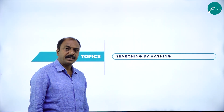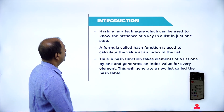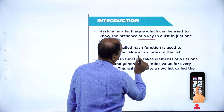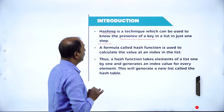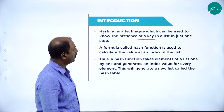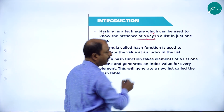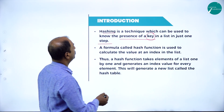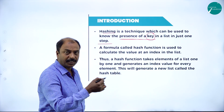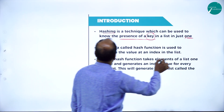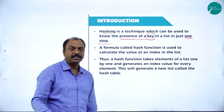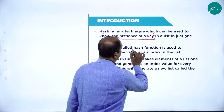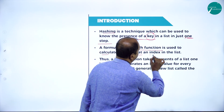Searching by hashing is one of the techniques in searching. Let us start with the definition. What is hashing? Hashing is a technique which can be used to know the presence of a key in a list just in one step. The searching technique looks for the presence of a key in the given list, but hashing is one more algorithm where it is possible to know the presence of an element in only one step. That is the advantage of hashing. A formula called hash function is used to calculate the value at an index in the list.